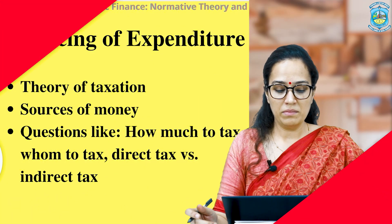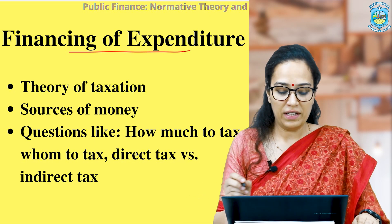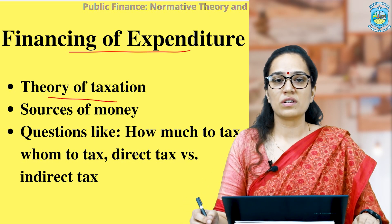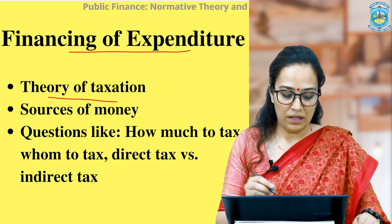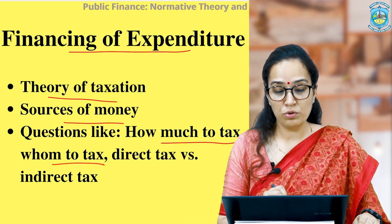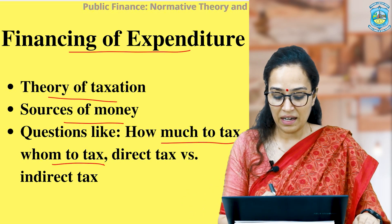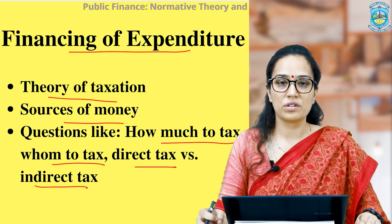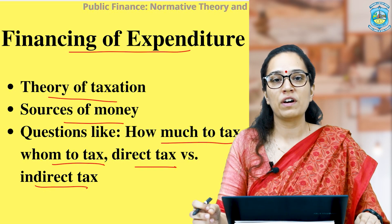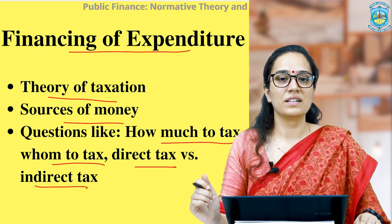Subsequently, when we have the plan and the procedure to implement that choice in place, next comes the money matters — how to finance those policies or schemes that you intend to launch. This is the question of financing the expenditure, which concerns the theory of taxation in public finance, since taxation is a major source of income or finance to the government. Questions like how much to tax, whom to tax, whether to resort to direct tax which burdens the rich or indirect tax which burdens the poor — all such questions are answered under this head.